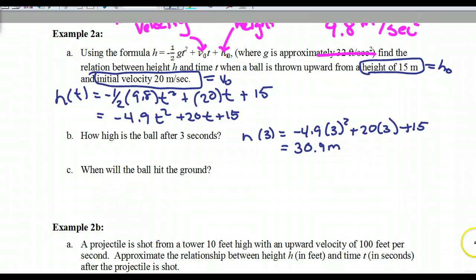Next it says, when will the ball hit the ground? Well, think about it. Here's the ground. You threw the ball, and it goes up, up, up, up, up. It's coming down, down, down, down. What does that look like? Parabola. And what are these points right here? Zero. So what do we got to find? We got to find the zeros.